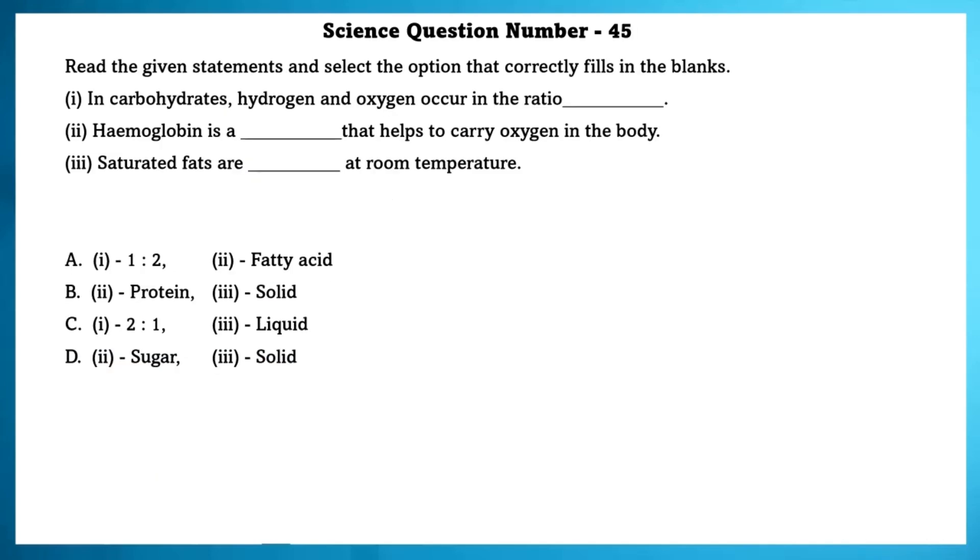Science question number 45. Read the given statement and select the correct option that correctly fills in the blank. In carbohydrate, hydrogen and oxygen occur in the ratio of 2 is to 1. Hemoglobin is a protein that helps to carry oxygen in the body. Saturated fats are solid at room temperature.